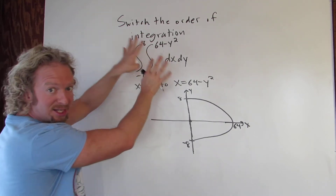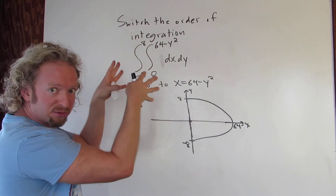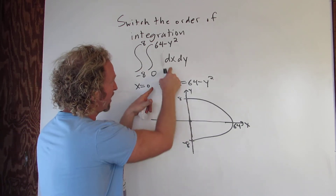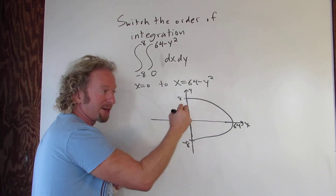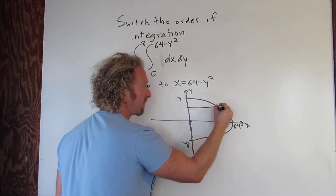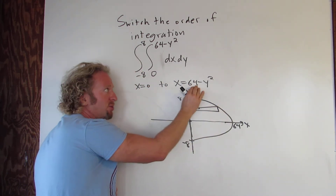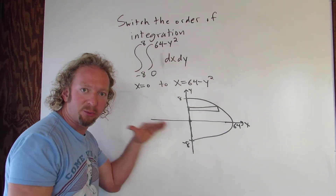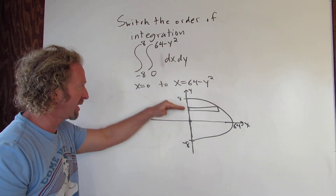As the integral is currently set up, the region of integration has us first integrating with respect to x. We have a horizontal rectangle because x is a function of y, so we go from 0 to 64 minus y squared.